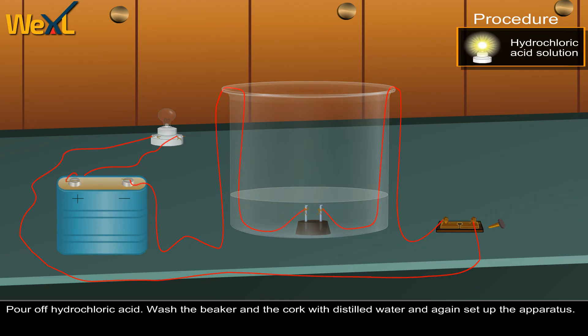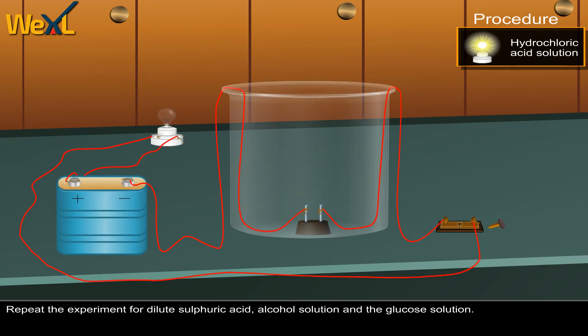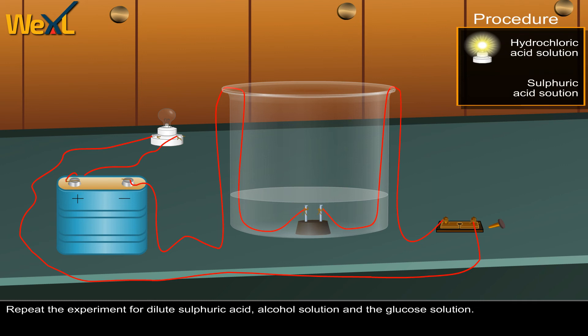Wash the beaker and the cork with distilled water and set up the apparatus again. Repeat the experiment for dilute sulfuric acid, alcohol solution and glucose solution.